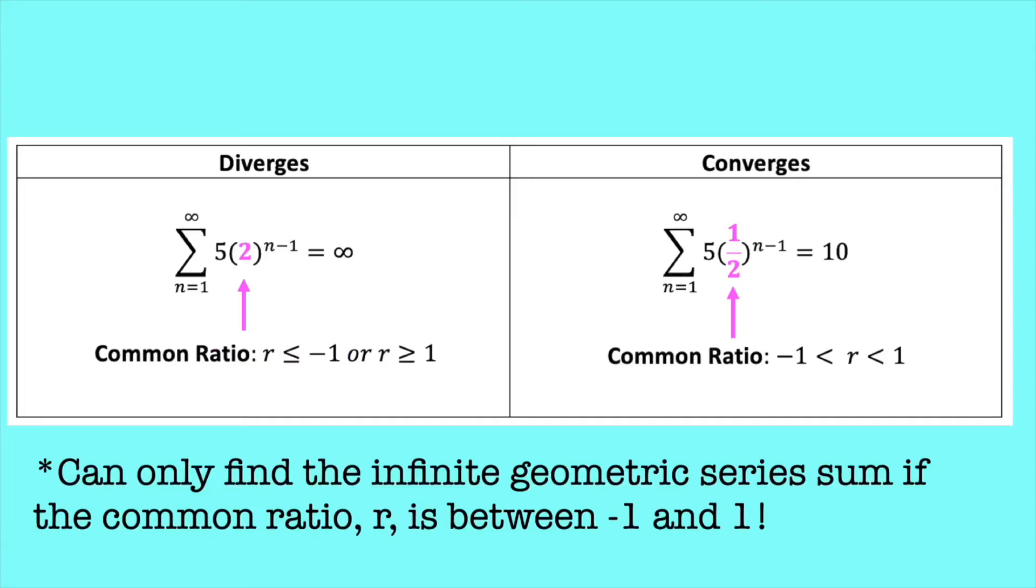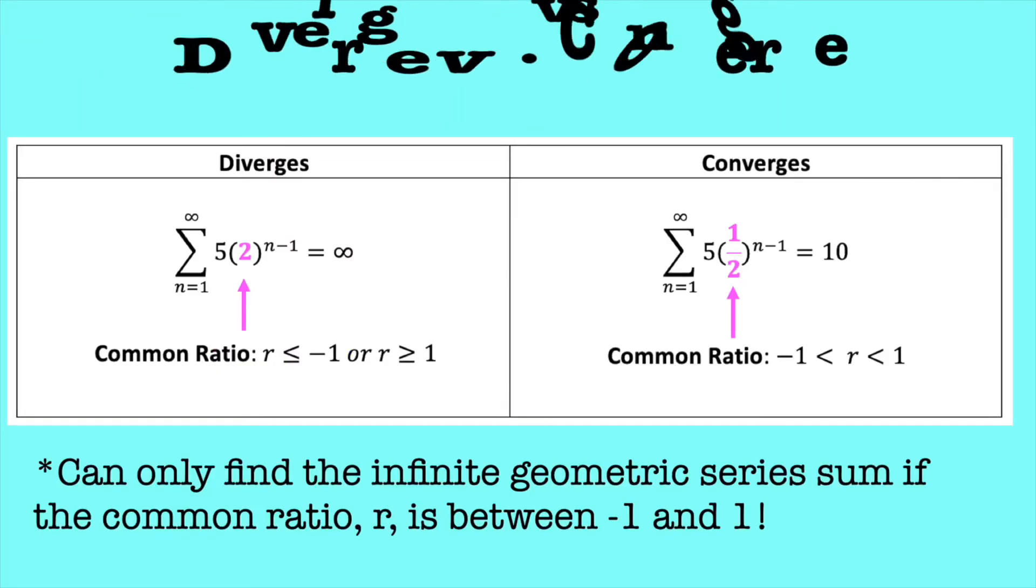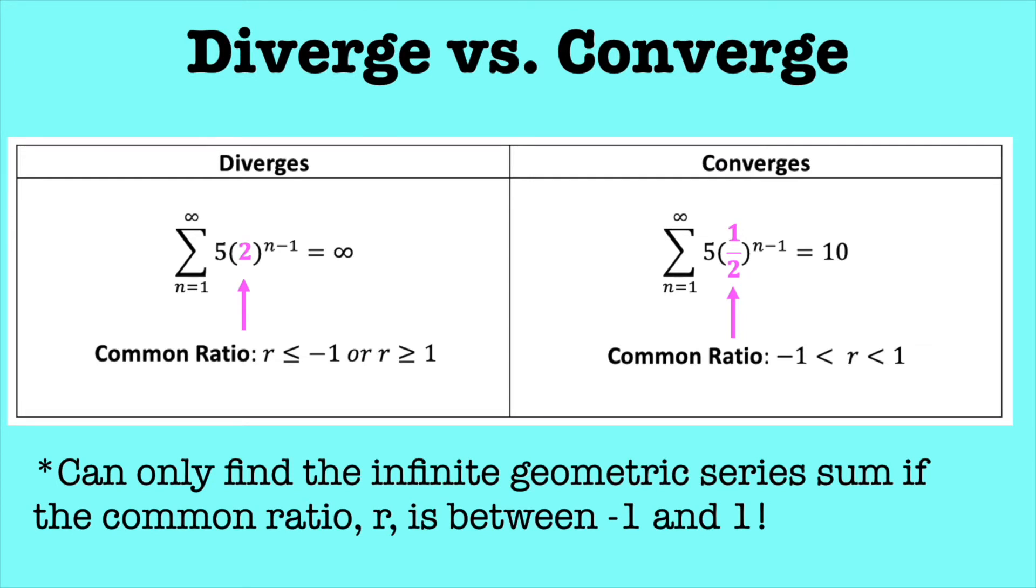When it comes to infinite geometric series, there are two types. There's the type that converges to a numerical value, and then there's the type that diverges to infinity.